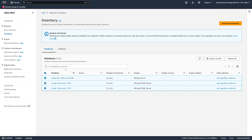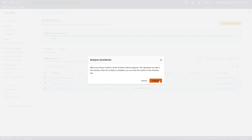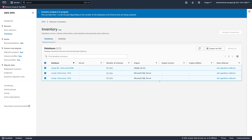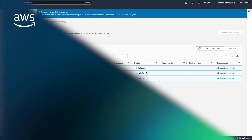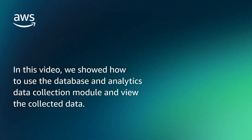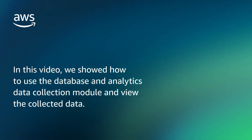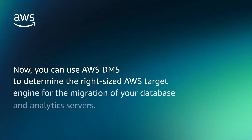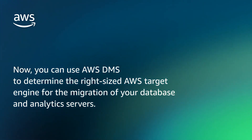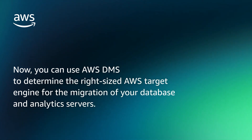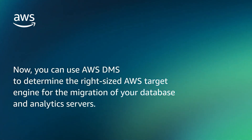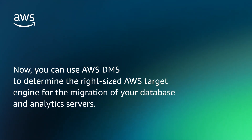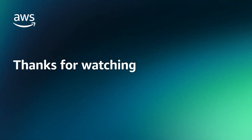You can analyze the databases to assess the complexity of the migration to the AWS cloud. In this video, we showed how to use the database and analytics data collection module and view the collected data. Now, you can use AWS DMS to determine the right-sized AWS target engine for the migration operation of your database and analytics servers. Thank you for watching this video.